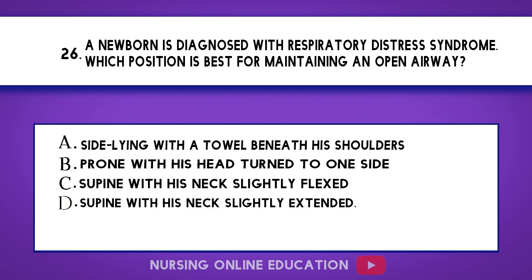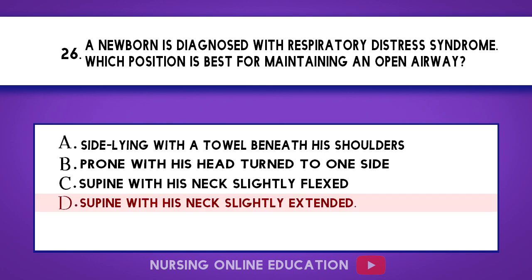Question 26. A newborn is diagnosed with respiratory distress syndrome. Which position is best for maintaining an open airway? A. Side lying with a towel beneath his shoulders. B. Prone with his head turned to one side. C. Supine with his neck slightly flexed. D. Supine with his neck slightly extended. The answer is option D: Supine with his neck slightly extended.